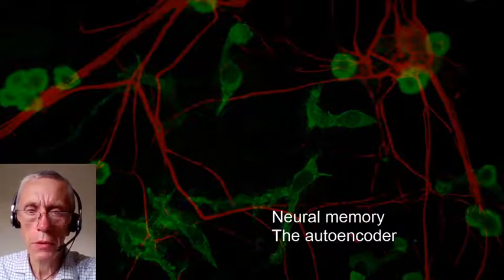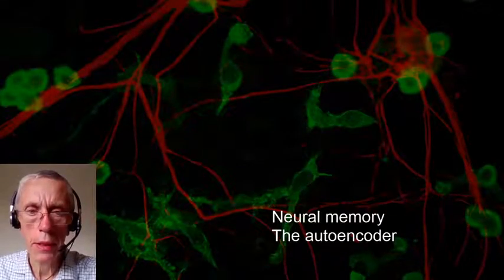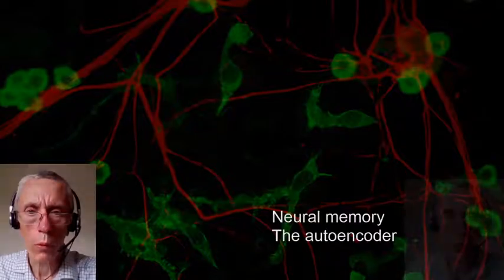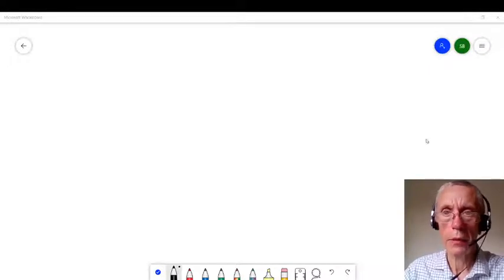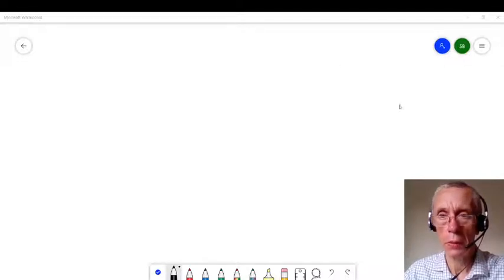But one of the most intriguing is the idea of what we call an autoencoder. Let me explain a bit how that works. This is very theoretical and drawn largely from machine learning, but could actually work with real neurons as well. We don't really know.